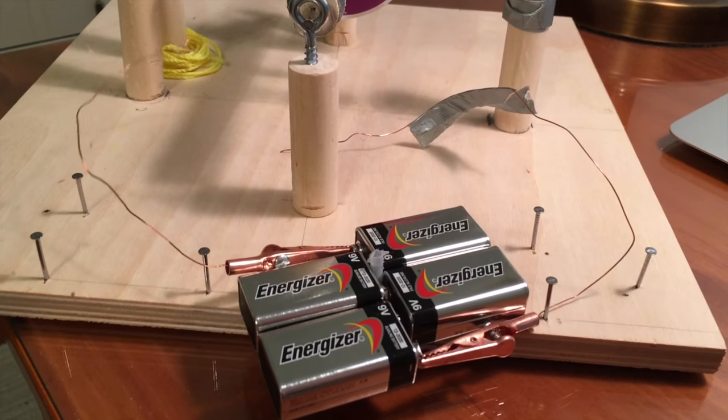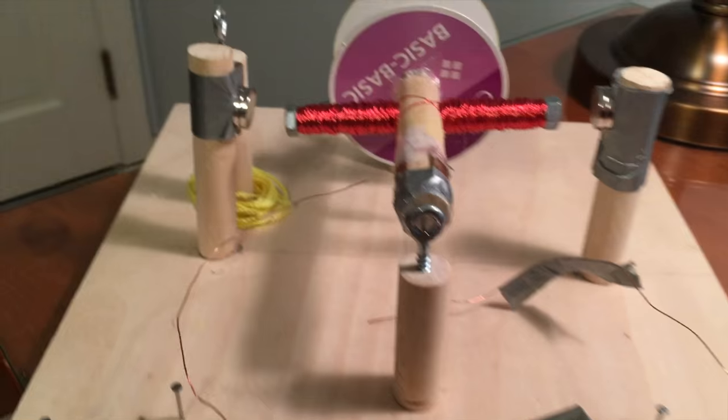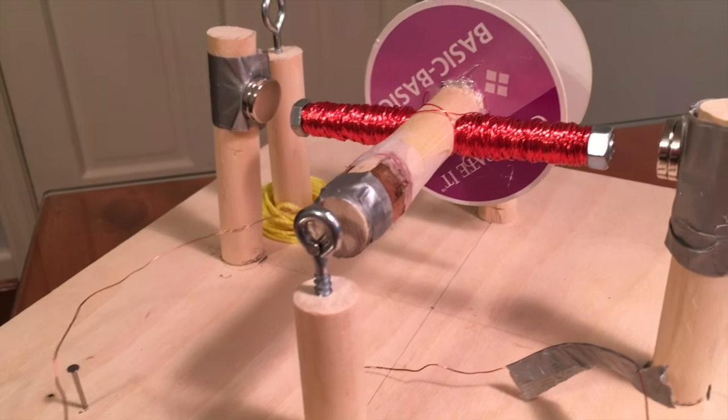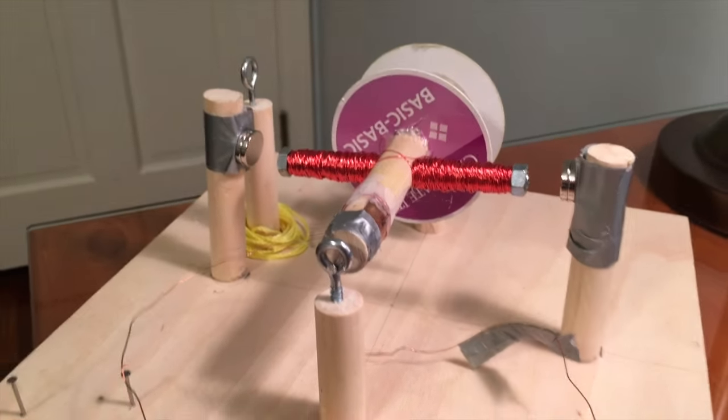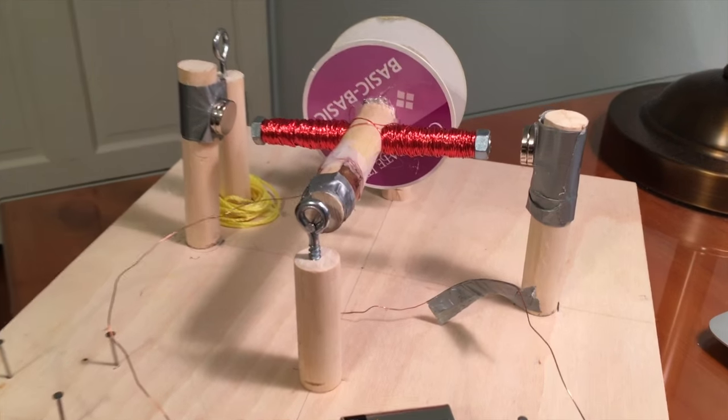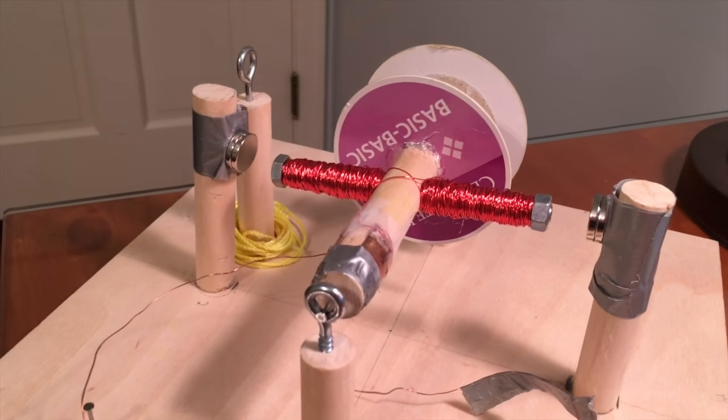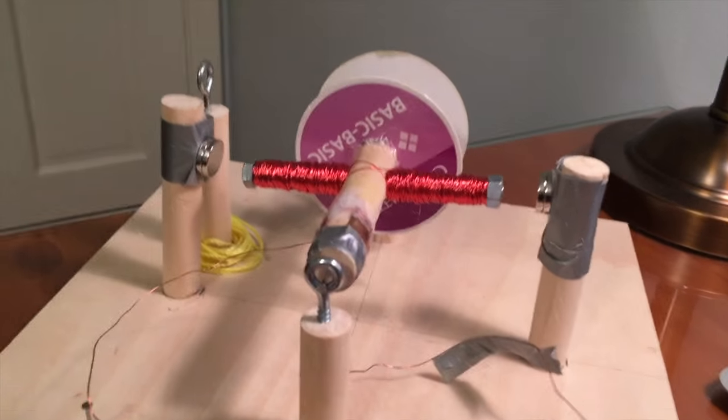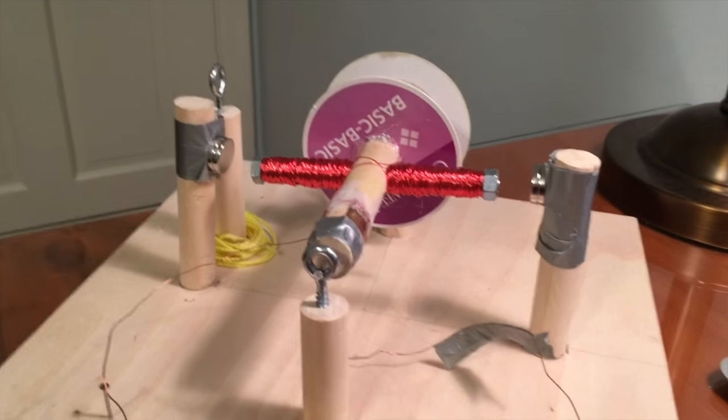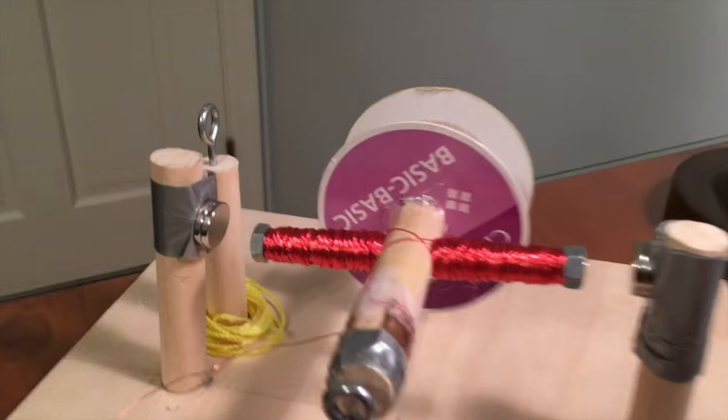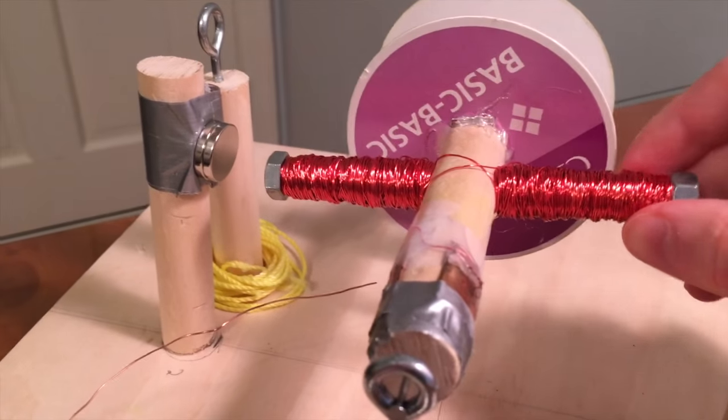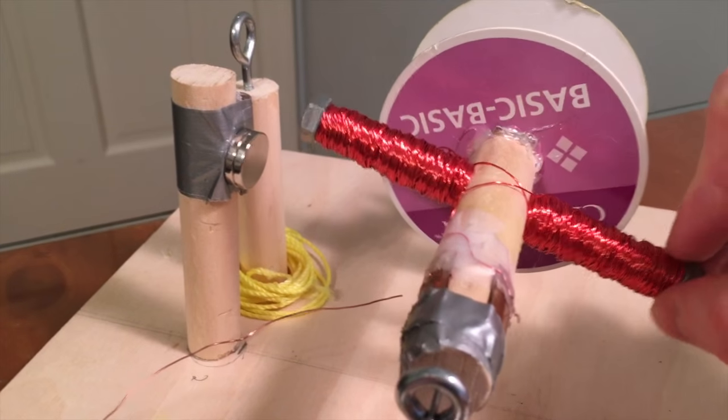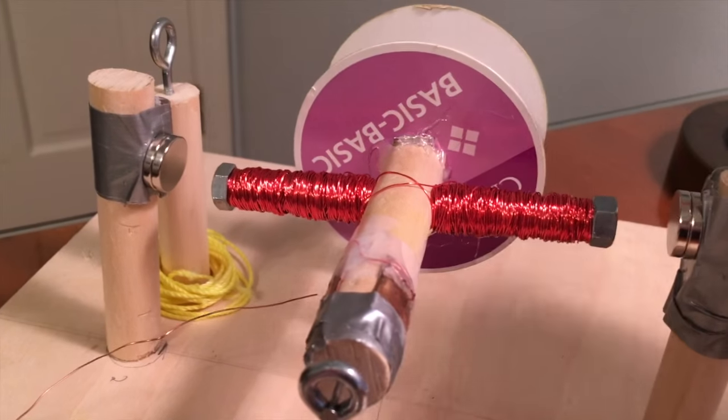When these wires connected to the batteries are placed on the commutator, it creates a current that runs through this enameled wire. That current and those electrons have to move through each wrap because this has a coating so the wires are not touching and the charges must go through every single wrap.